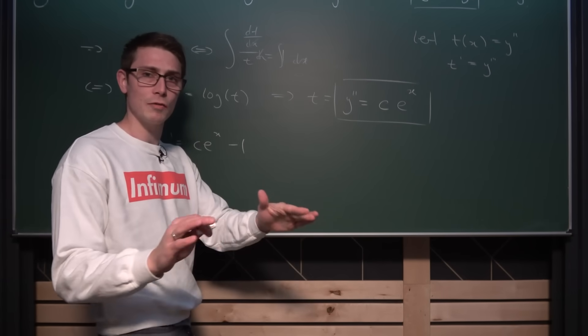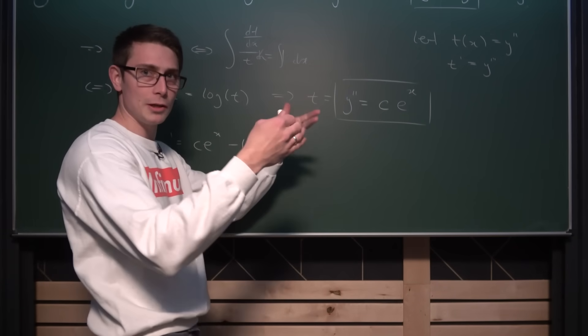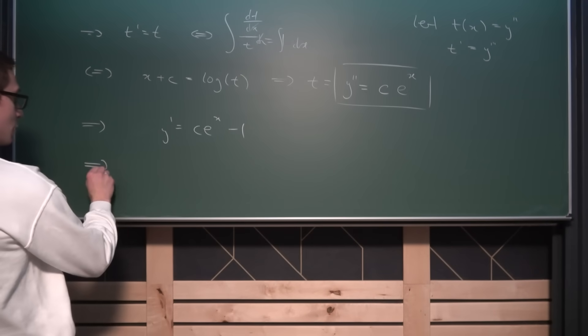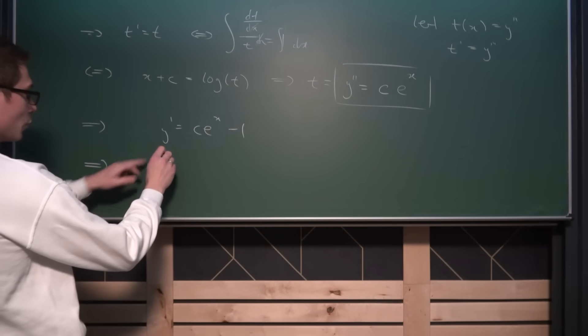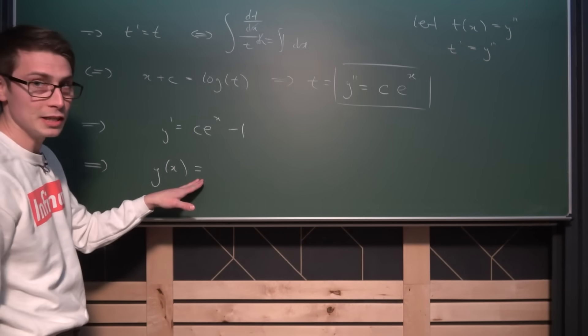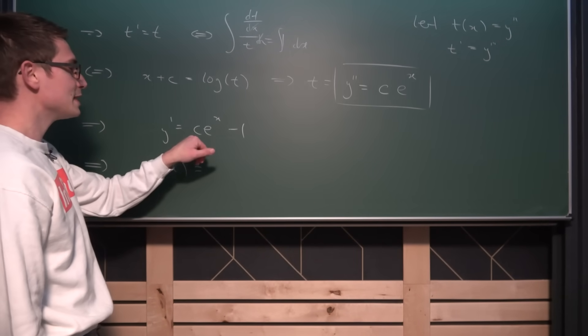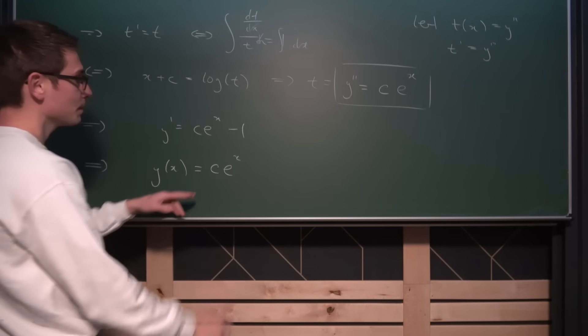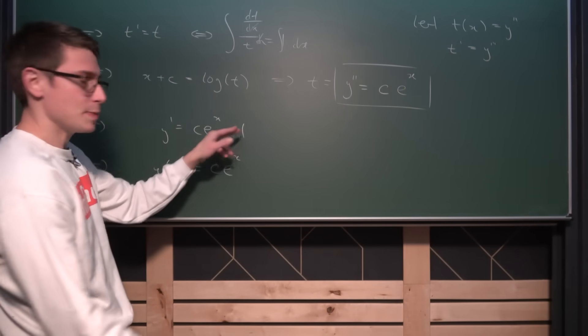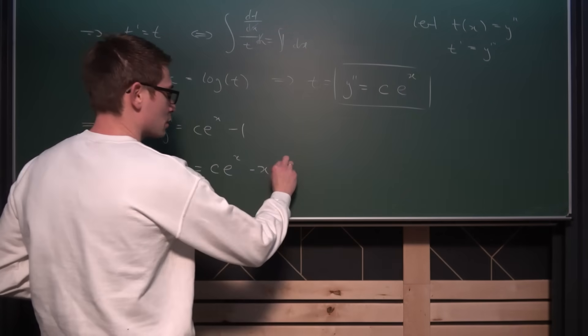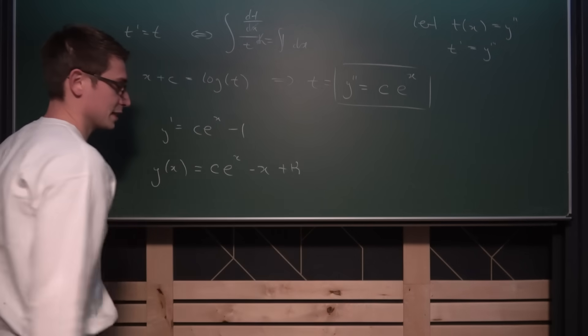I'm saying almost here because this differential equation has a cool little twist to it once again. If we integrate both sides with respect to X, I'm terribly sorry, then we are going to get Y of X out. The solution to our differential equation being if we integrate C times e to the X with respect to X, we are going to get C times e to the X out. Integrating negative 1 with respect to X is going to result in negative X plus some arbitrary constant. I'm going to call this constant kappa for now.